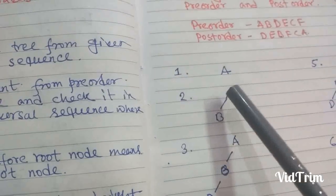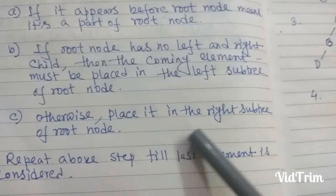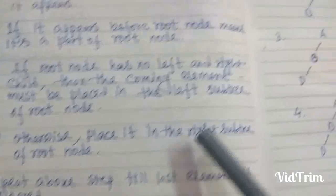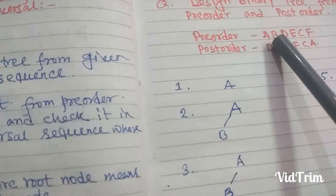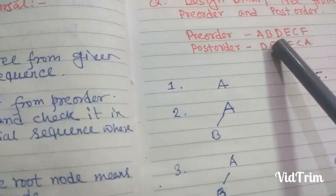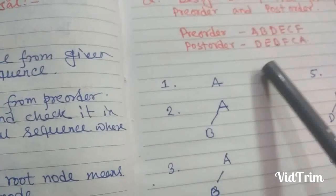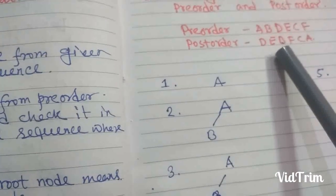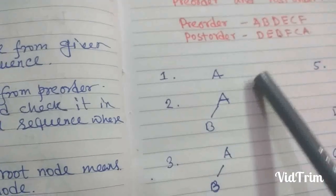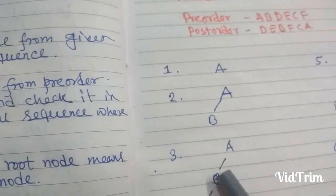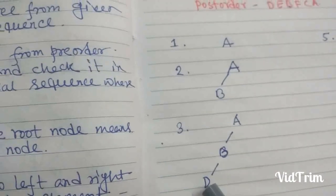Repeating the above step, we take the next element after B, which is D. The position of D is before B in the post-order sequence, so D is a part of B. Since B has no left child, D will be placed in the left subtree of B.